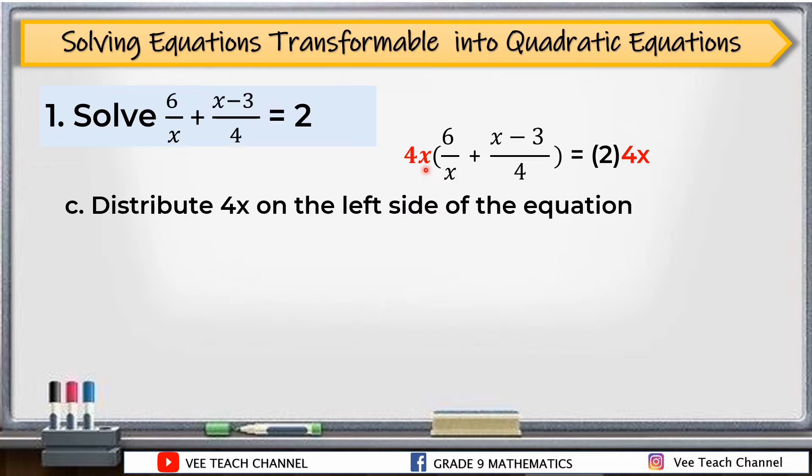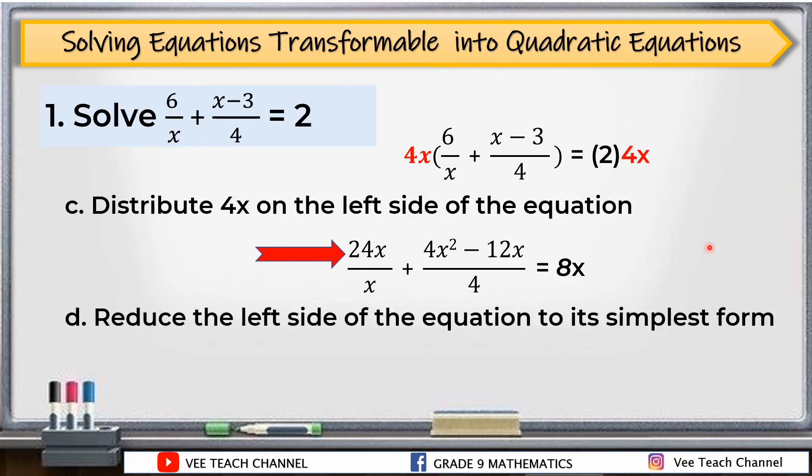Now let's distribute 4x on the left side of the equation. We will multiply 4x by 6, that is 24x. 4x times x is 4x². And 4x times -3 is -12x. Let's copy the denominators. On the other side, we multiply 2 and 4x, which gives us 8x.